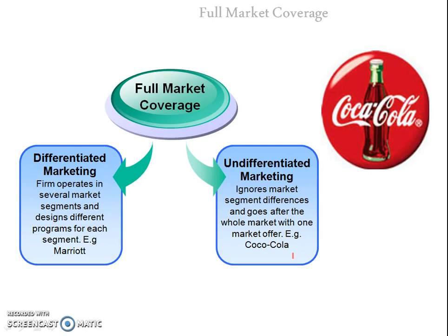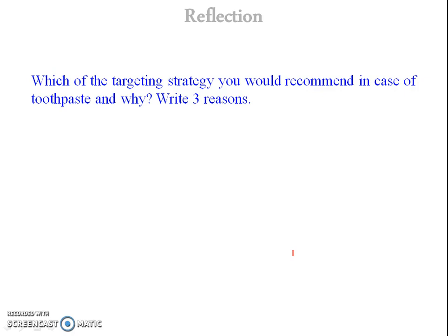Differentiated marketing is generally better in today's scenario because every customer has different needs and wants, but its limitation is that it is costly. Undifferentiated marketing is suitable for only certain types of products and has the advantage of a lower marketing budget. As a closing activity, recommend a targeting strategy for toothpaste, and give three reasons for selecting that particular strategy. That's all about today's lecture on targeting.